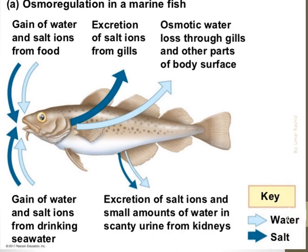Since the salt content in the blood of marine fishes is much lower than that of sea water, they constantly tend to lose water and build up salt. To replace the water loss, they continually drink sea water. Since their small kidneys can only excrete a relatively small amount of urine, excretion of salt additionally takes place in the gills, where chloride cells work in reverse compared to freshwater fishes. These fishes excrete salt ions from their gills, and also excrete salt ions and small amounts of water in scanty urine from their kidneys.